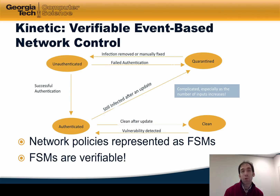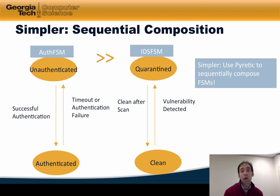Kinetic enables verifiable event-based network control. Network policies are represented as finite state machines, where each finite state machine maps to a Pyretic policy. One of the nice properties about finite state machines is that they're verifiable — finite state machines are amenable to verification techniques including model checking, as we'll see later in this lesson. Pyretic enables sequential composition of finite state machines, which makes it easier for a network operator to express policies. It also allows the expression of policies with finite state machines to scale, which makes it more tractable not only to express policies but also to verify them.